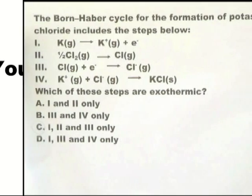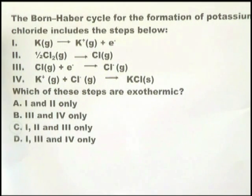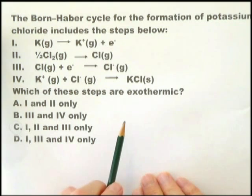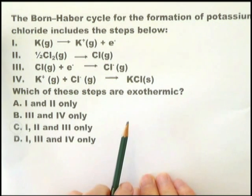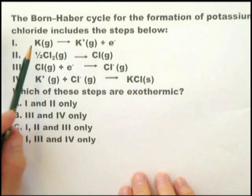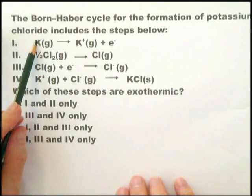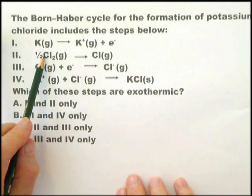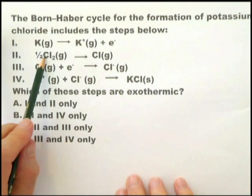Questions on the Born-Haber cycle come up quite often in exams, and the reason is examiners can ask a whole range of different questions on this topic. This one asks which reactions are exothermic. So we know this one is exothermic. This one is not exothermic because you're breaking a bond, therefore it's endothermic. You've got to put energy in.